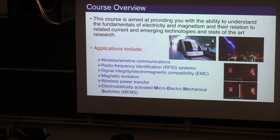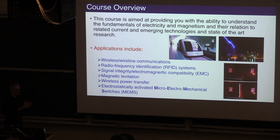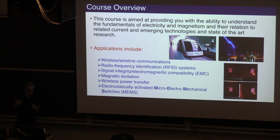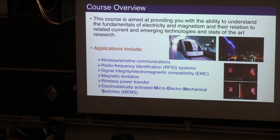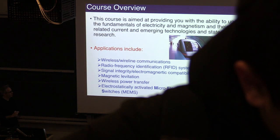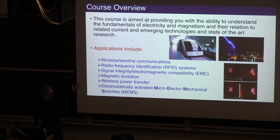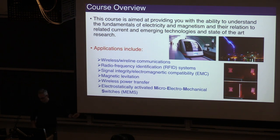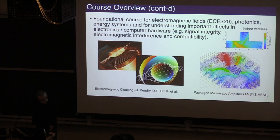Even when Bombardier Aerospace produces a new aircraft, it must be certified at its factory in Downsview that it will sustain electromagnetic interference — when it lands, takes off, and is surrounded by ground transmitters — to ensure safety-critical electronics remain operable. This area of electromagnetic compatibility is very important. Magnetic levitation itself prompts many applications, as does wireless power transfer, and even micro-electromechanical switches in cell phones that are electrostatically activated.